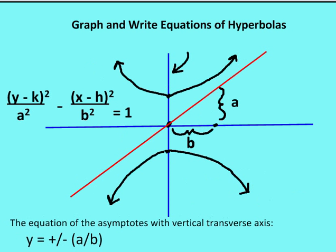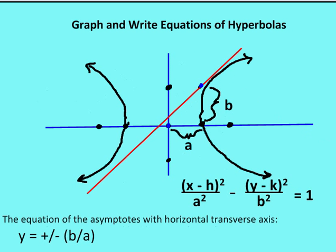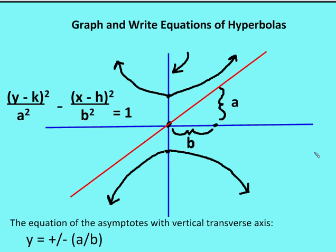When the transverse axis is vertical, the slope of the asymptotes becomes ±a/b instead of ±b/a. The a value is still the distance from the center to the vertex, and b still helps locate the asymptote reference points — but the slope ratio is flipped. For both orientations you need to find the asymptote equation because the asymptotes give you the framework for sketching the branches of the hyperbola.